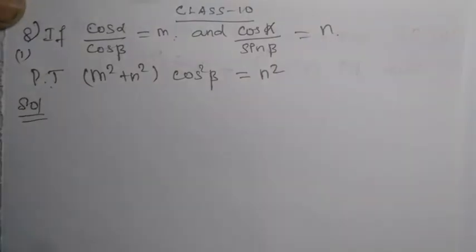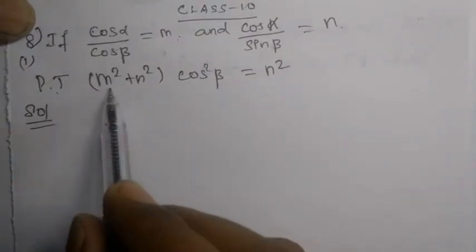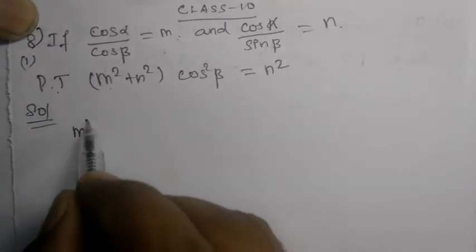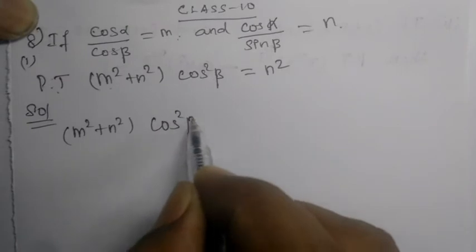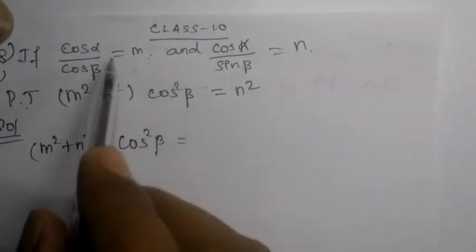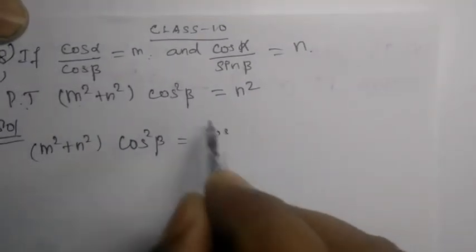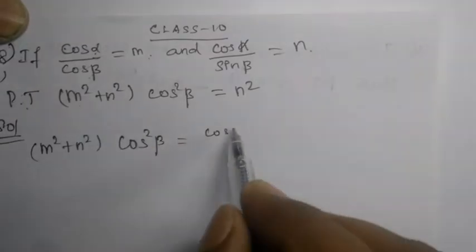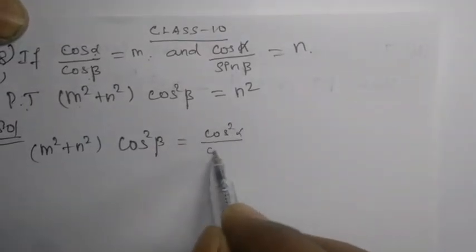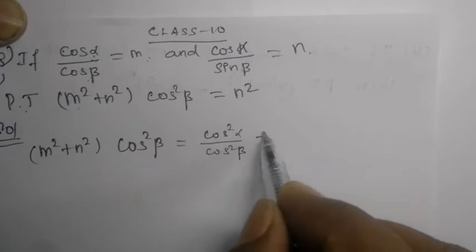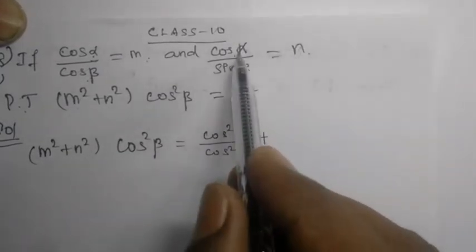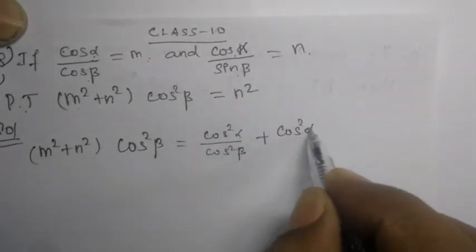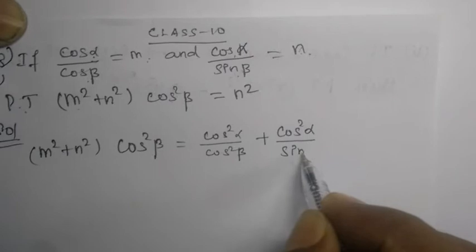Answer. We start with the left-hand side: m squared plus n squared cos squared beta. Substituting m squared as cos squared alpha divided by cos squared beta, and n squared as cos squared alpha divided by sin squared beta, we get: cos squared alpha over cos squared beta, plus cos squared alpha over sin squared beta, into cos squared beta.